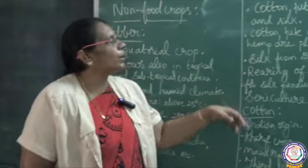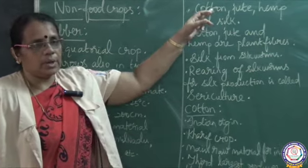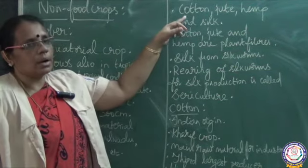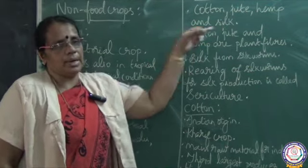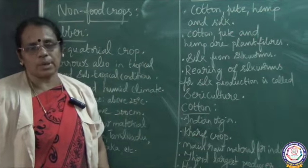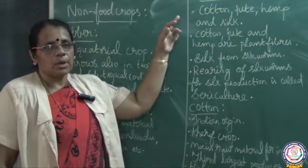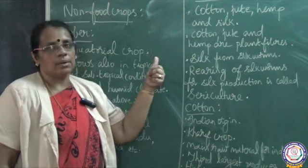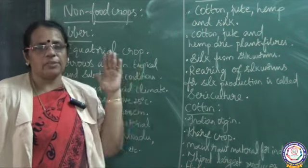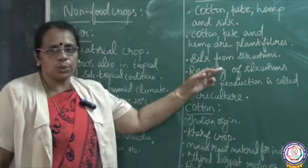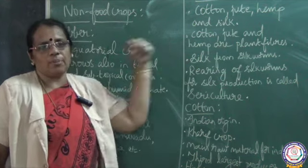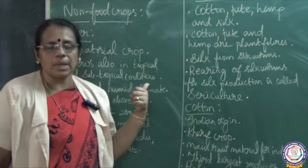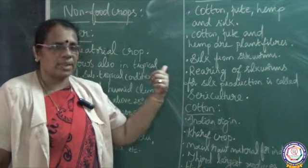Now we discuss fiber crops: cotton, jute, hemp and silk. The first three — cotton, jute and hemp — are obtained from plants and are plant fibers. Silk, however, is obtained from silkworms and is therefore an animal fiber.